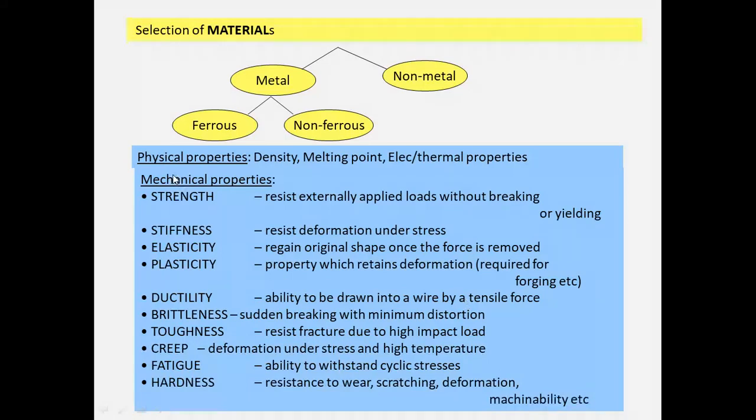We have to consider the mechanical and physical properties. Physical properties include density, melting point, electrical and thermal properties. Mechanical properties include: strength, which resists externally applied loads without breaking or yielding; stiffness, which resists deformation under stress; and elasticity, which allows the material to regain its original shape once the force is removed.